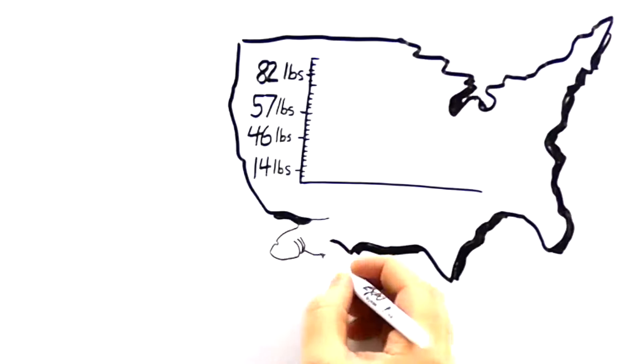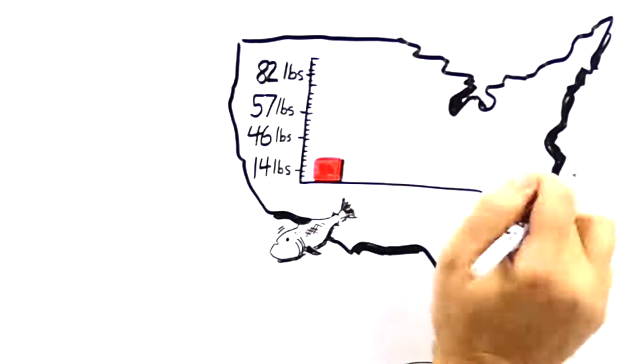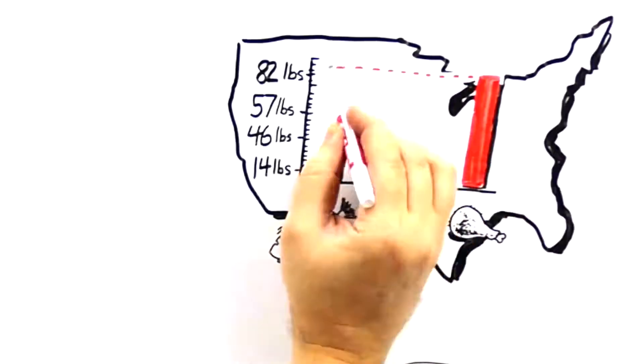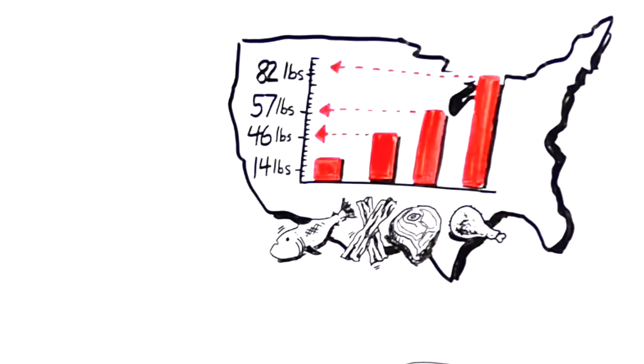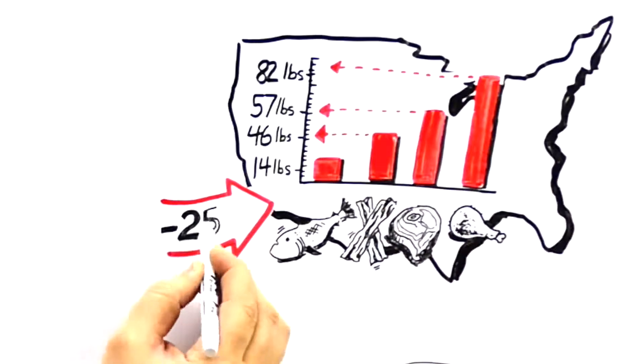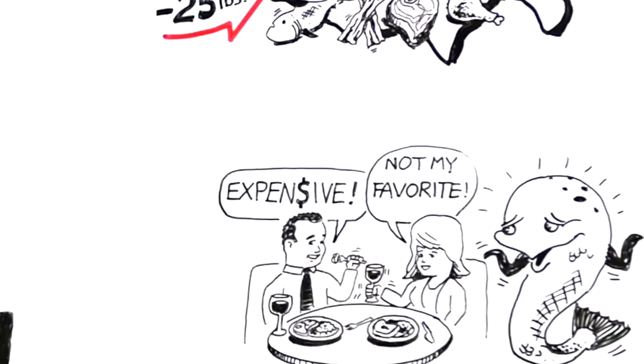In fact, if you look at the United States, the average consumer eats just 14 pounds of fish per year, compared to 82 pounds of chicken, 57 pounds of beef, and 46 pounds of pork. This leaves consumers short roughly 25 pounds of fish per year when you consider what health authorities recommend and what is actually consumed in the diet.